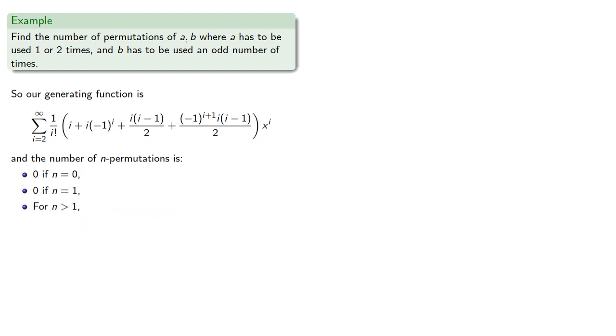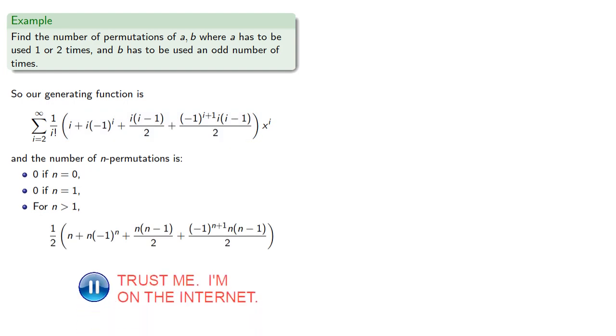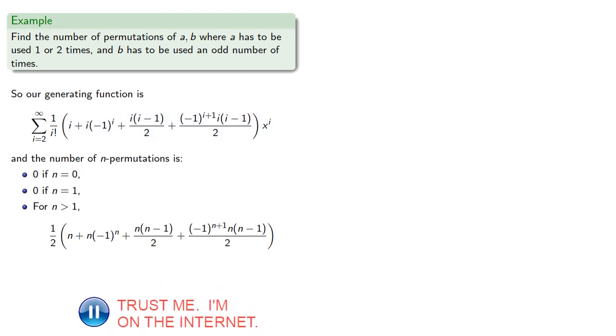For n greater than 1, the number of n permutations will be this coefficient, which we'll express in terms of n. Now, this is a lot of work, and it would be a shame to get the wrong answer because we made an algebraic mistake. So let's check this.